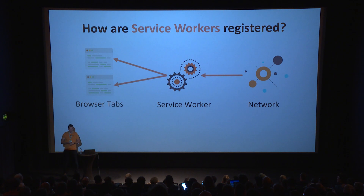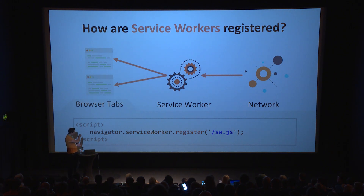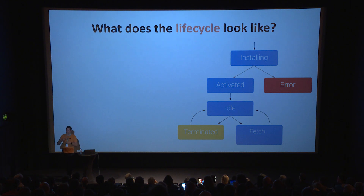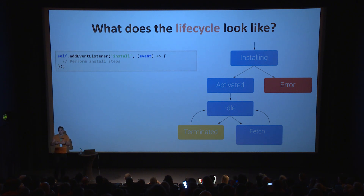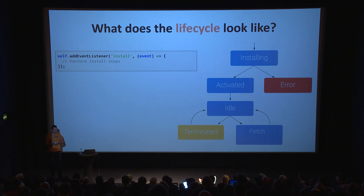To use service workers, you first need to register them. From JavaScript, you call a register function with the file that has the service worker logic. You should first do a feature detection because it's not available in all browsers. When you do this, it will register the service worker, start downloading it, parse it in the background, and then it will become active later — not immediately, because it has a complex lifecycle. The first event fired is the install event, which happens when the browser fully parses and initializes the service worker.